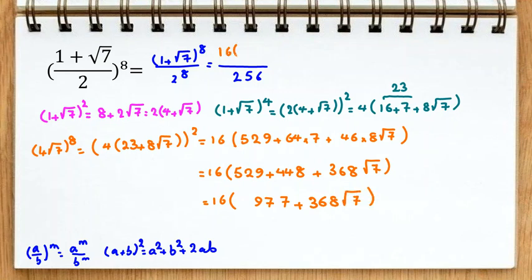Now, let's write it. 16 times 977 plus 368 root 7. If we simplify, it will be 16. And our last answer will be 977 plus 368 root 7.